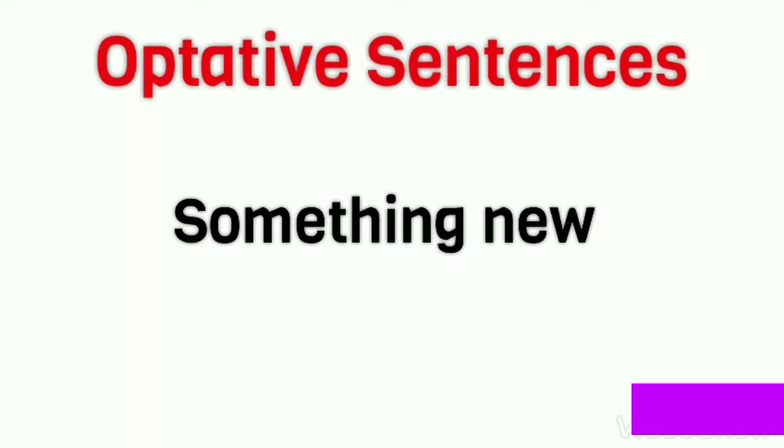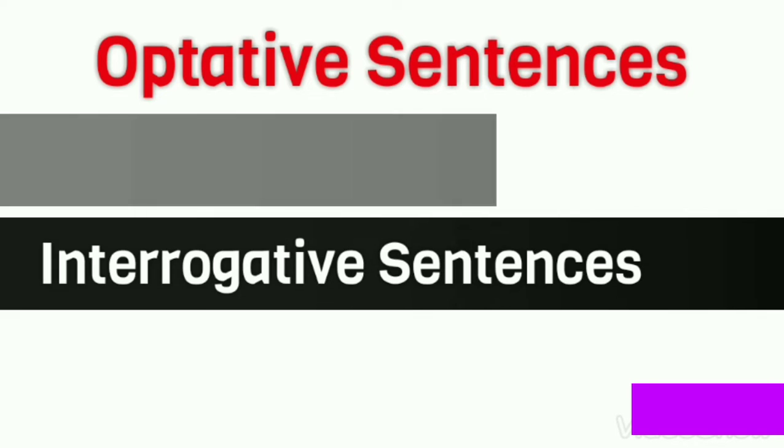The first four types of sentences are covered in another video, kinds of sentences part 2. Today's English class brings you something new on the topic optative sentences along with examples. You might be thinking what is an optative sentence. Till now we have learnt about declarative sentences, interrogative sentences, imperative sentences, and exclamatory sentences. But optative sentences are not new to English grammar. We have been using such sentences without knowing that they are a type of optative sentence.